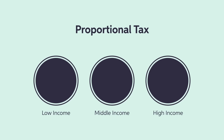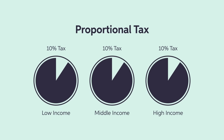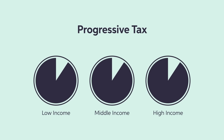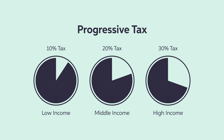For example, a proportional tax in which everybody pays, let's say, 10% of their income to the government is more convenient and easier to compute than a progressive tax, where tax rates increase with the income of the taxpayer.